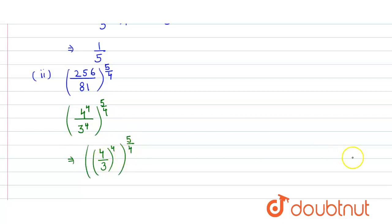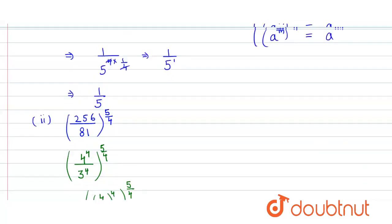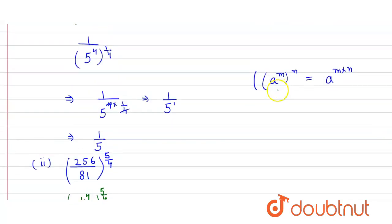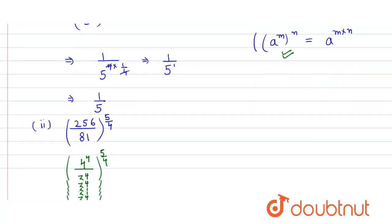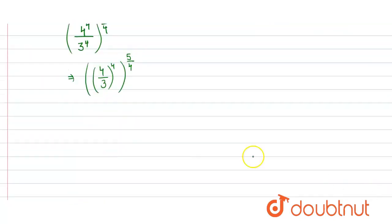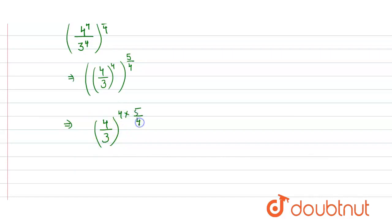To solve this, we again use the property of exponents — a raised to power m raised to power n equals a raised to power m into n. So here we get 4 divided by 3 raised to power 4 into 5 by 4. The 4 cancels, giving us 4 by 3 raised to power 5.